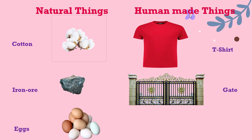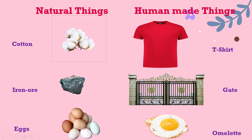Next, these are eggs. These are natural things — they come from a hen. Now we make an omelette out of this egg, so the omelette is a human made thing, because we make it and it does not come naturally. So from eggs, an omelette is prepared. Eggs are a natural thing, whereas an omelette is a human made thing.